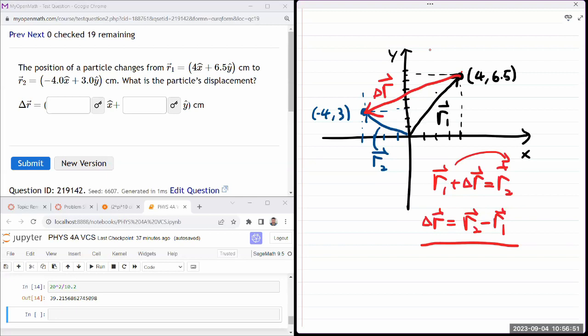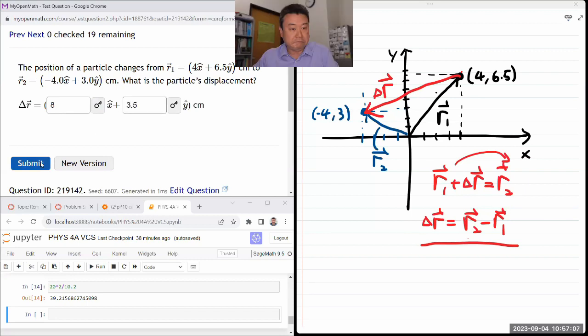So here, all you have to do is that R2 minus R1. And you can do it component by component. So, you know, four minus minus four, so it's four plus four, eight. And 6.5 minus three, 3.5. And that'll be it.